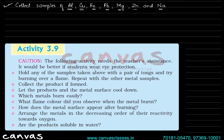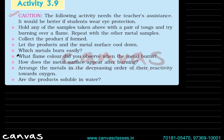In Activity 3.9: hold any of the metal samples with a pair of tongs, then hold it in a burning flame. We have to do this for all the metal samples — keep the flame on each sample and collect the product if formed.